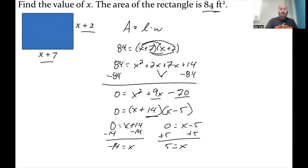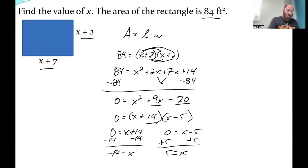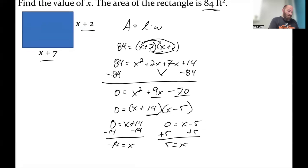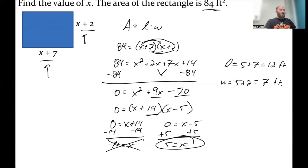Now in this problem, it says find the value of x. That's all I want. I don't want the negative 14. Negative 14 would give me negative lengths for my rectangle here. Not realistic. So my only answer I'm going to say is x = 5. If you want to go a little bit further and find what is the length, well, that's going to be 5 + 7 giving me 12. In this case, it could be feet. And if I want the width, I'm going to do 5 + 2, which is going to give me 7 feet for that one.